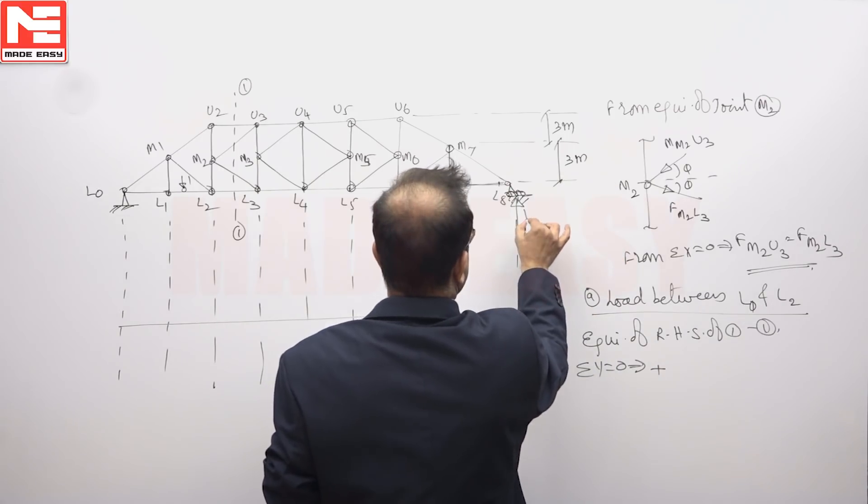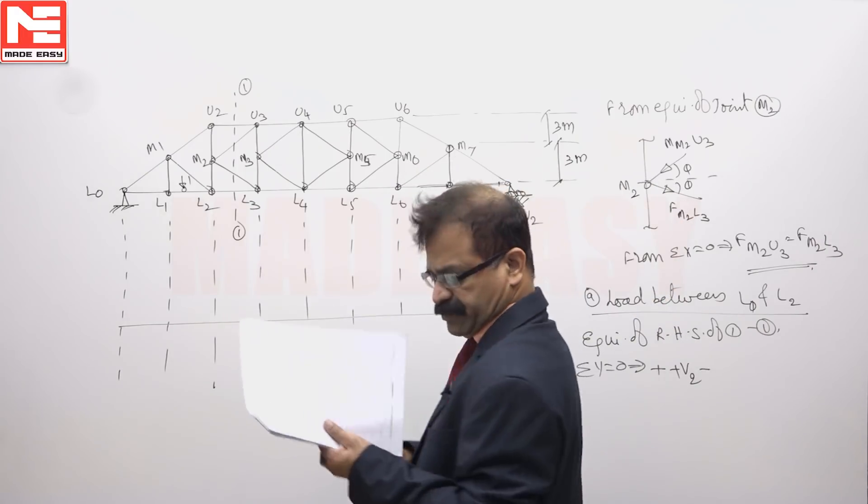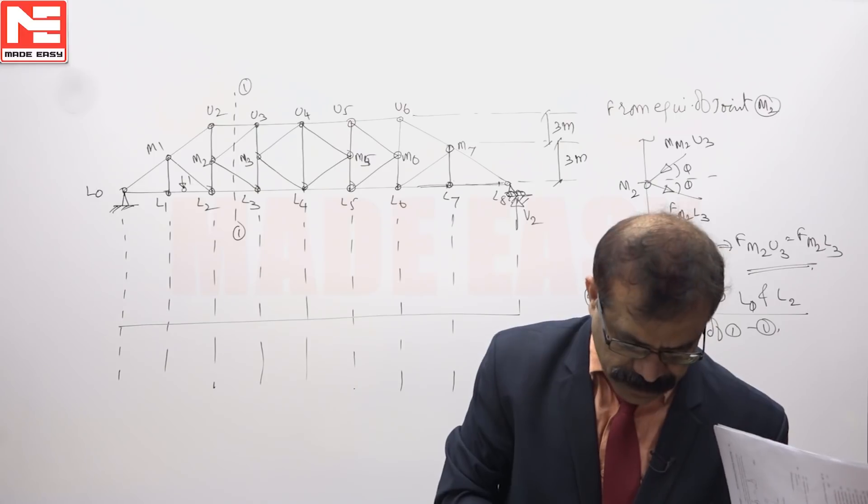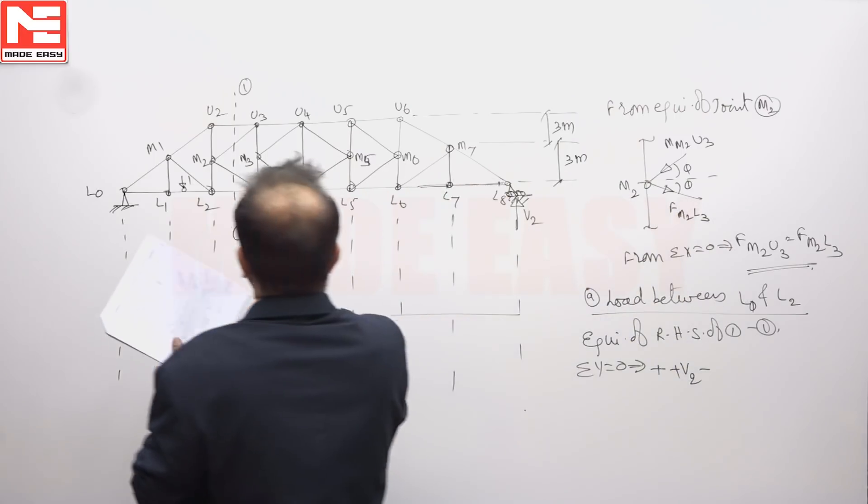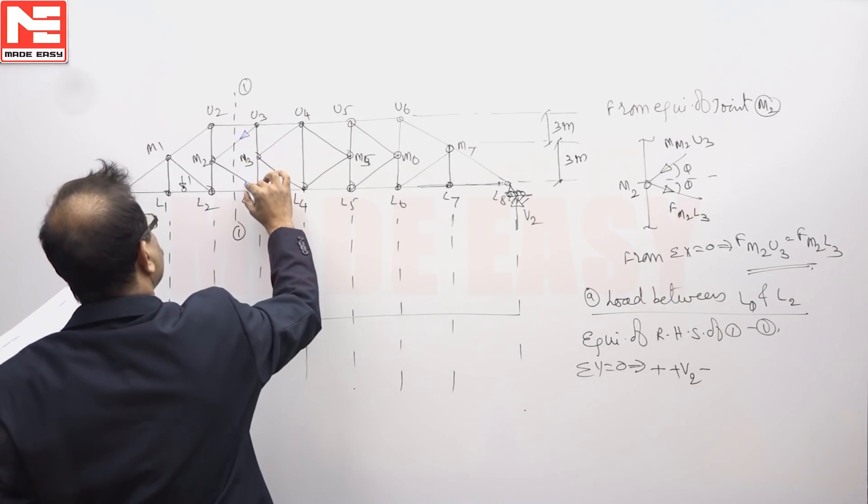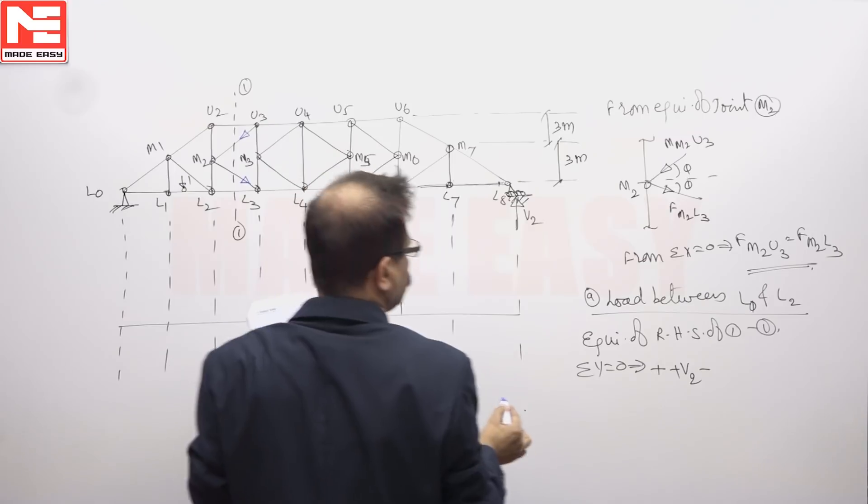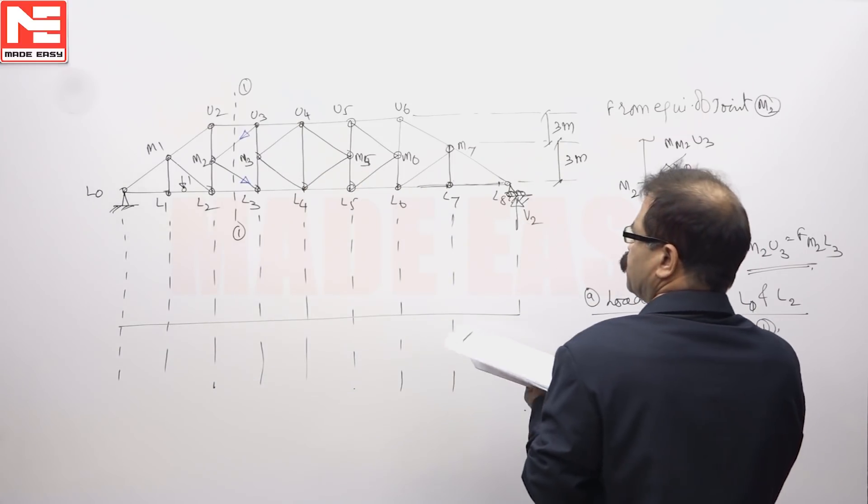This reaction you can take, say V2 plus V2 minus these forces. After cutting the load, we will see the right side. If this is away from the joint, it should be towards the joint, then only sigma y equals 0 can happen.